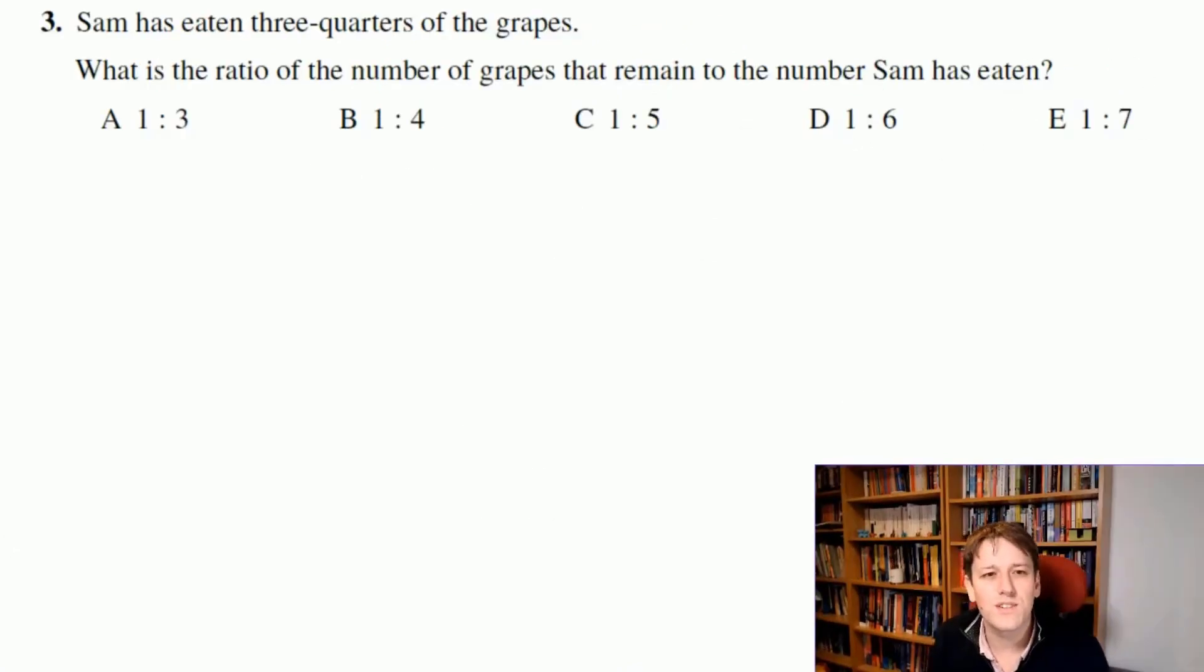We'll do this question in two ways. If Sam has eaten 3 quarters of the grapes that means there's 1 quarter remaining, so the ratio would be 1 quarter to 3 quarters. I can multiply this ratio by 4 to get an equivalent ratio and we'd see that the answer is 1 to 3.